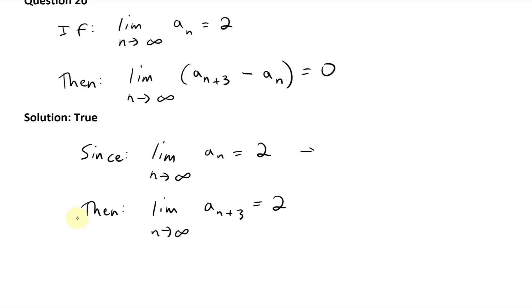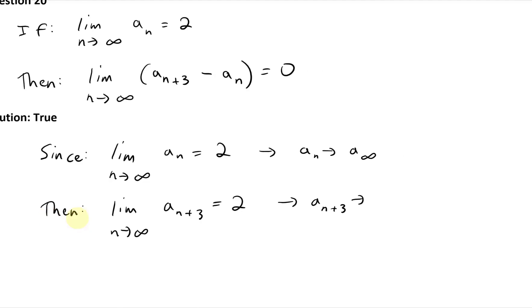So in other words, in this part we have a_n is going towards infinity, and in this one we have a_{n+3} is going towards infinity plus 3. Infinity plus 3 is just infinity, it doesn't matter. It's still infinity, it's just insignificant.